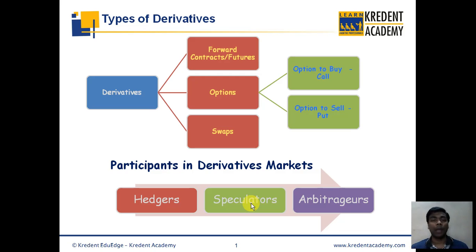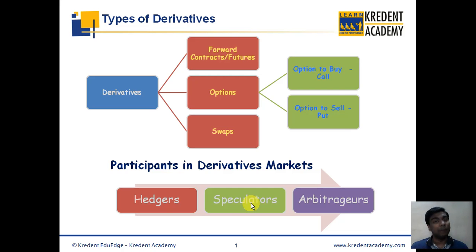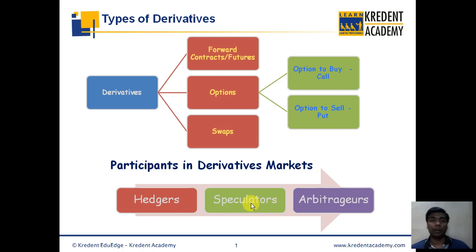Speculators do the exact opposite — they take on risk. Derivatives can get extremely risky because you can take on much more risk than simply buying the underlying asset. Speculators have a view or opinion about the price of an underlying asset, and based on that they form an opinion about the derivative contract being traded and try to profit from their speculative assumptions. If their opinion is wrong, they can end up losing a lot of money.